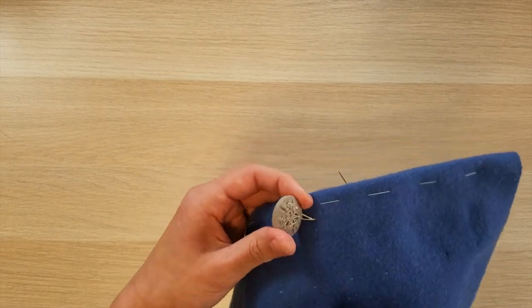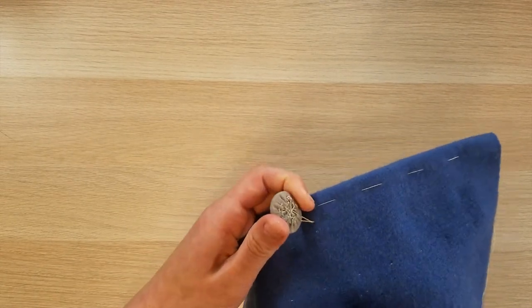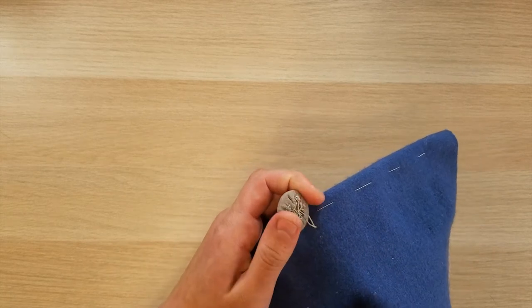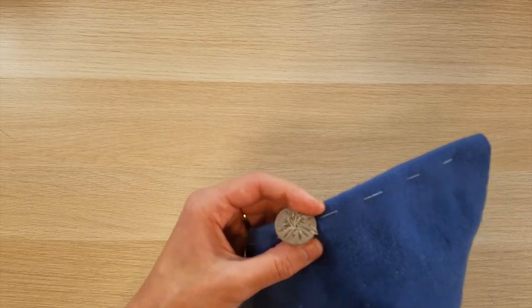Do not pull your stitch completely tight to the fabric. Leave a little slack. Then take another stitch near the opposite edge of the button and sink the needle back through.